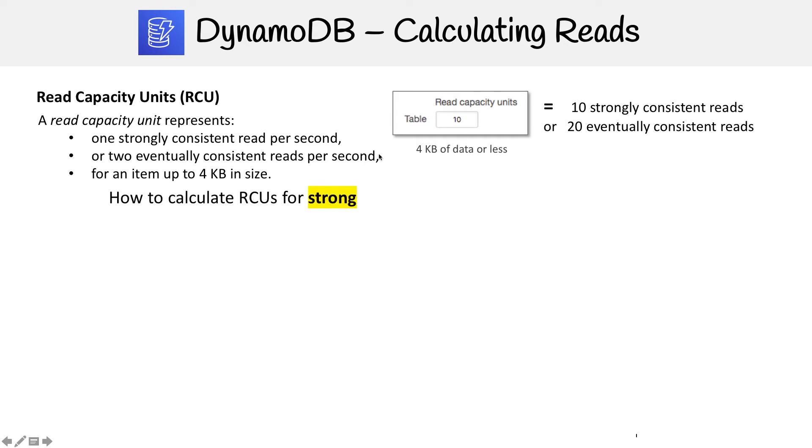So let's first look at how to calculate RCUs for strongly consistent reads. And the formula is we're going to round our data up to the nearest four, we're going to divide by four, and then we're going to times by the number of reads.